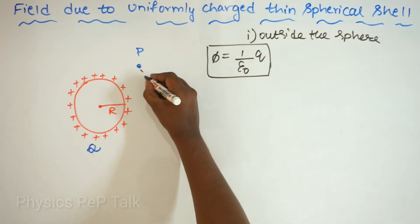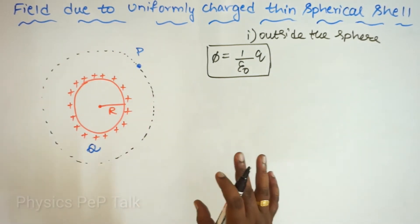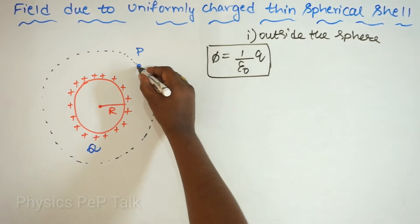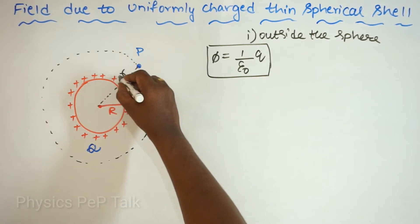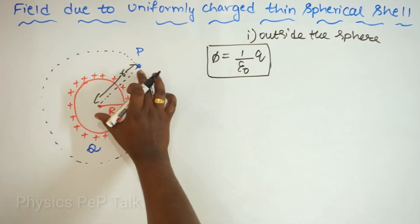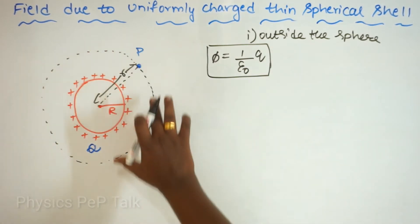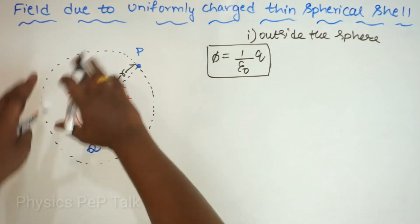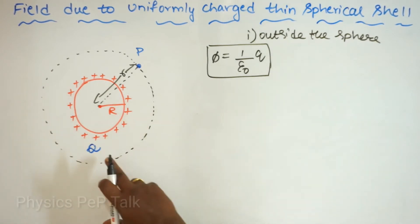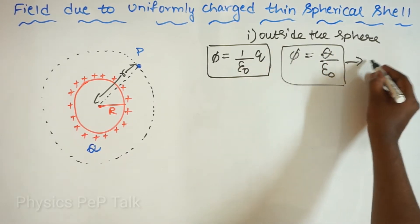I will consider an imaginary sphere with point P on its surface, at a distance of small r from the center of the hollow sphere. The radius of this Gaussian sphere is small r. According to Gauss's law, the charge enclosed by this Gaussian surface is the charge on the small sphere, which is capital Q. So, phi becomes Q by epsilon naught. I will call this equation number 1.